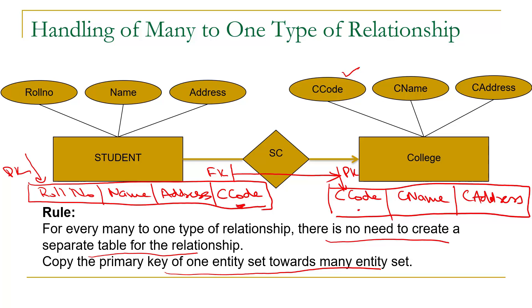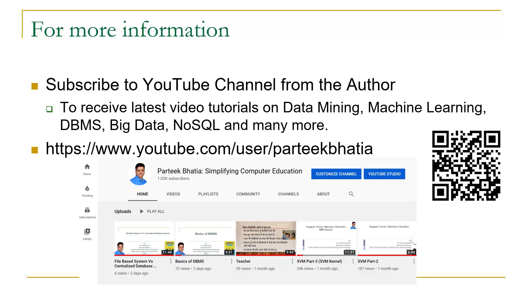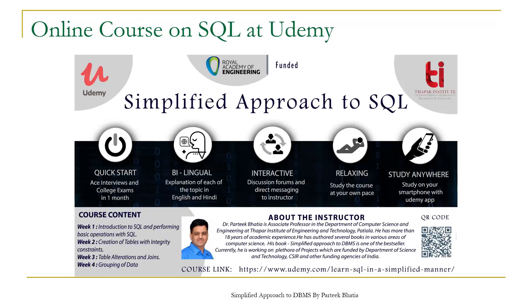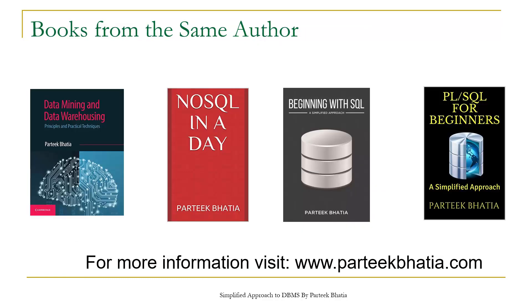This is all about handling many-to-one type of relationships in the conversion of ER diagrams to tables. To read more, you can refer to the book 'Simplified Approach to DBMS' available on Amazon. Please subscribe to this YouTube channel for latest tutorials on data mining, machine learning, DBMS, big data, NoSQL, and more. Online courses on SQL and PL/SQL are also available on Udemy. Visit the website prateekbatia.com for more information.